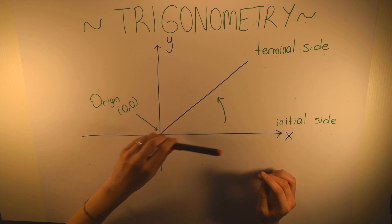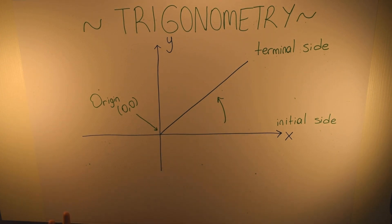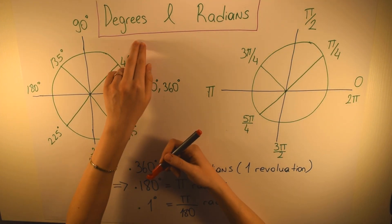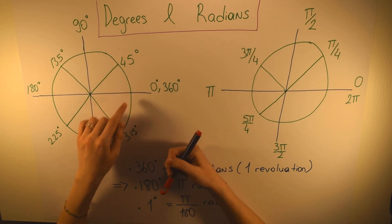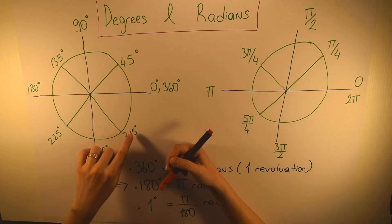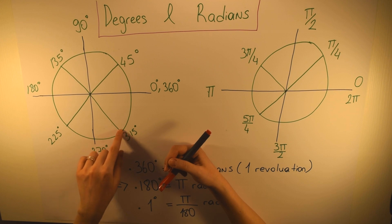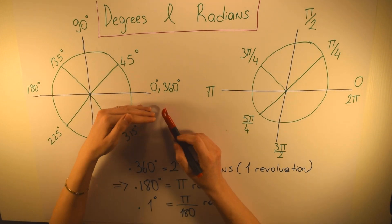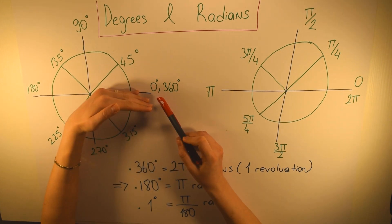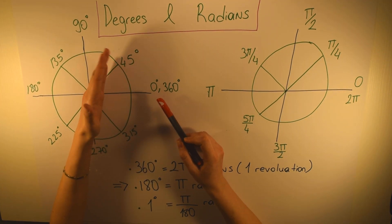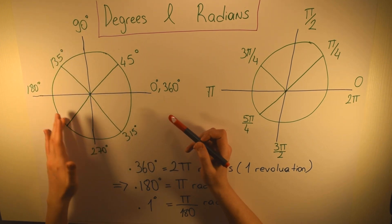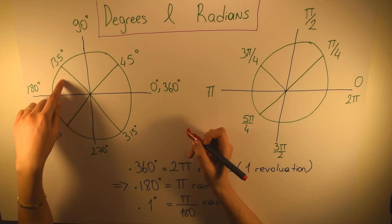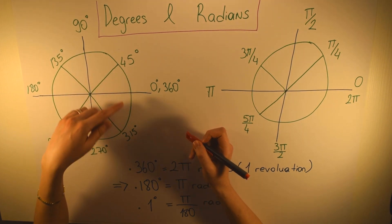Let's continue with degrees and radians. Angles can be measured in two ways: degrees and radians. A circle is comprised of 360 degrees, which is called one revolution. This circle starts with zero degrees and goes through 45, 90, 135, all the way to 360 degrees — this one full tour is called one revolution.